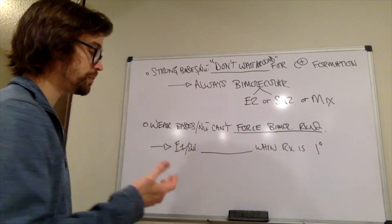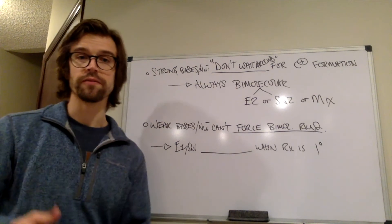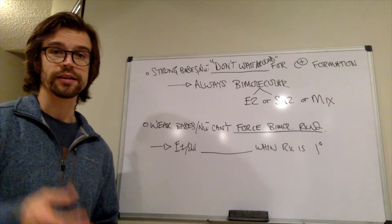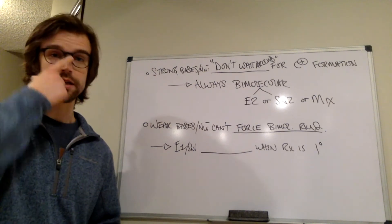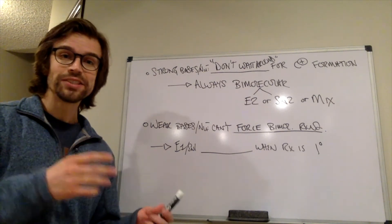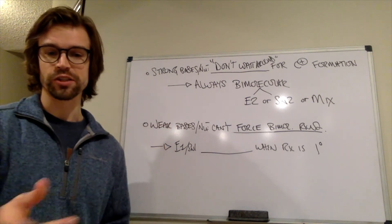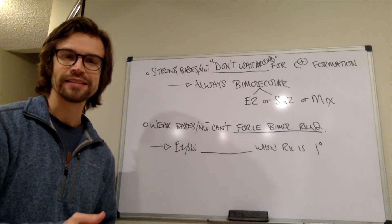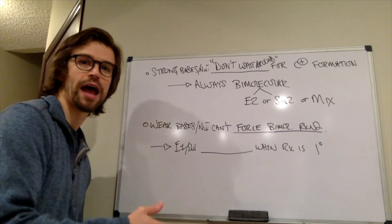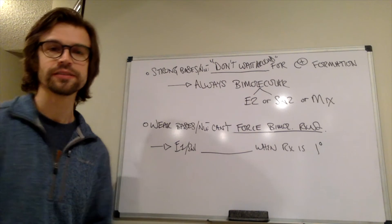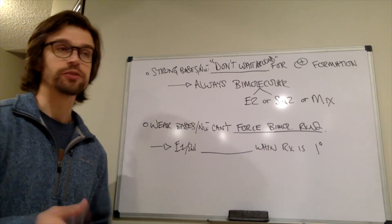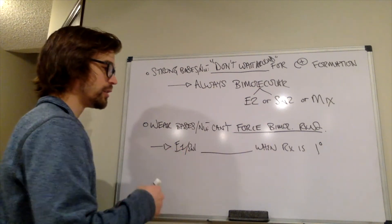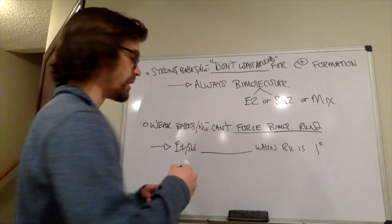So if you have a weak base or a weak nucleophile, the answer is that it always has to be one of two things. It can either be a mixture of E1 and SN1, because remember very recently, we said that when SN1 happens, E1 also happens. But also, that's one outcome is that it would be a mixture of E1 and SN1, but E1 and SN1 can't occur. They never occur.